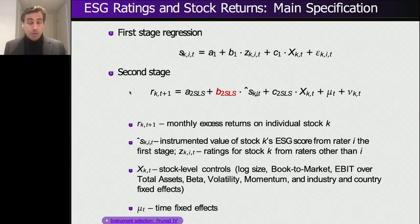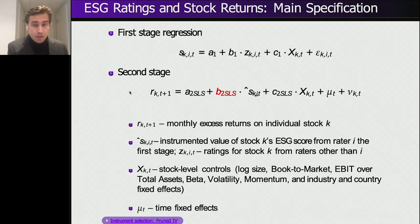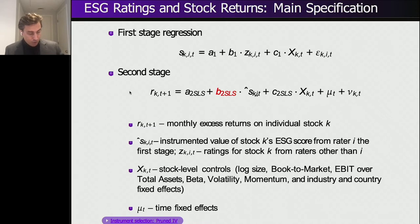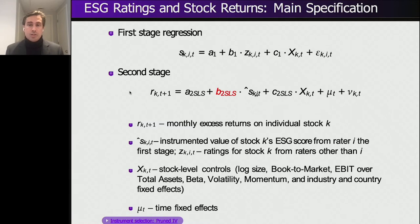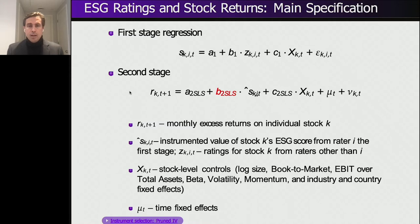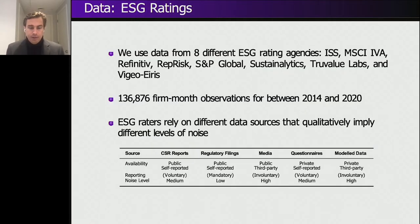In academia, in order to figure out if ESG ratings cause higher expected future returns, we use a regression — we regress future expected return on ESG ratings. We control for company-related financial variables such as log size, book-to-market ratio, EBIT over total assets, beta, volatility, momentum, and industry and country fixed effects. In this standard setting, we just use one rating. One assumption we have is that ratings are noisy but all measure the same true ESG performance.